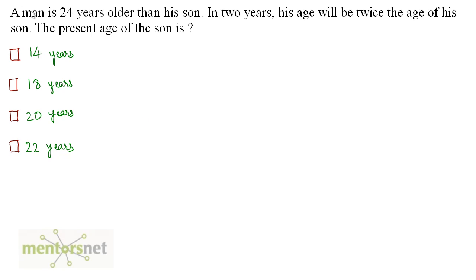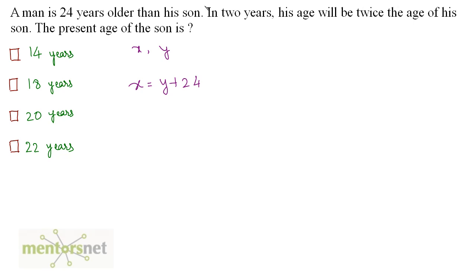Let us move on to the second question. A man is 24 years older than his son. In 2 years, his age will be twice the age of his son. What is the present age of the son? Let the man's age be x and the son's age be y. We have been given the man is 24 years older than his son, so x is equal to y plus 24. In 2 years, his age will be twice the age of his son.